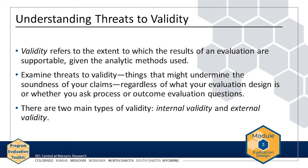There are two main types of validity: internal validity and external validity. In this chapter, you will learn the difference between the two types and see examples of each. Both can be threatened in many ways, but this chapter focuses only on the most common ways.